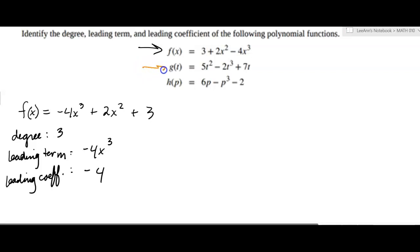Okay, now let's look at g of t. So is g of t in the right order? No. It should be negative 2t cubed first plus 5t squared plus 7t. So now my exponents are going in order from largest to smallest.